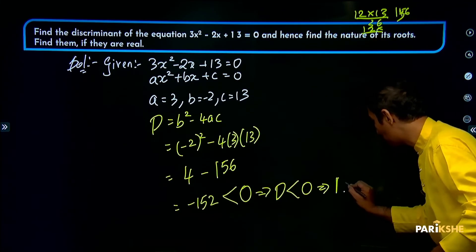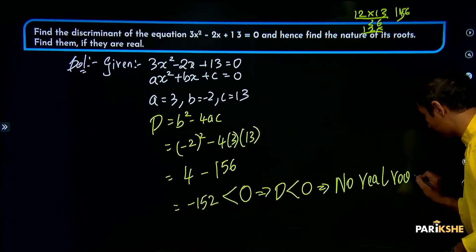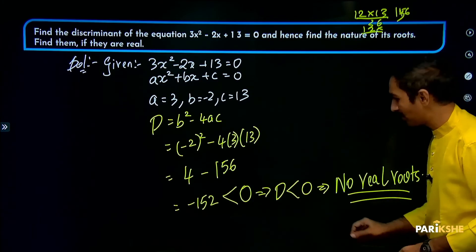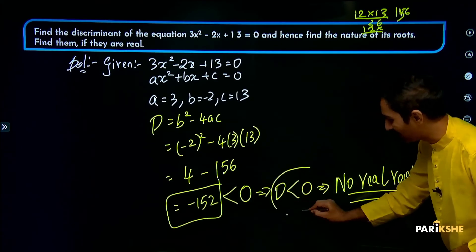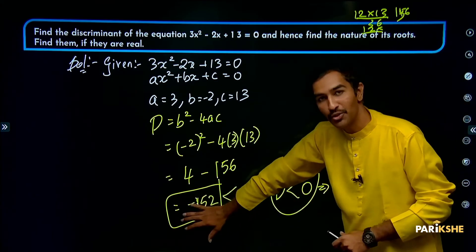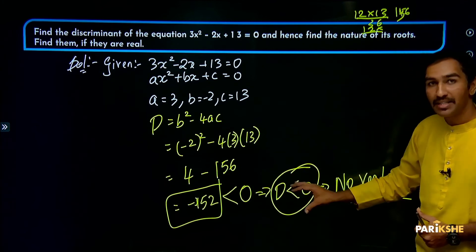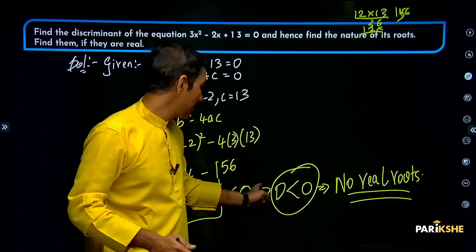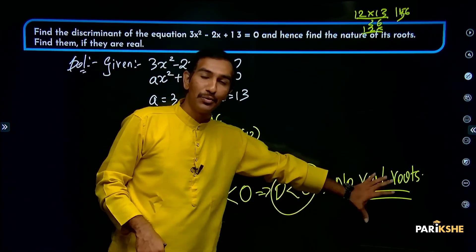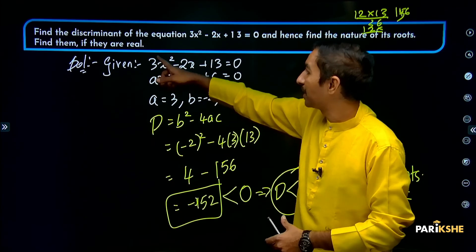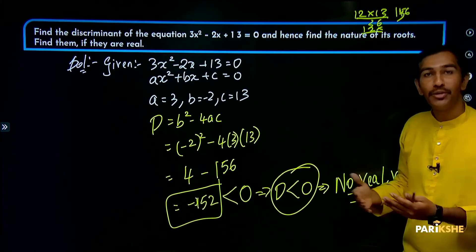Since minus 152 is less than 0, D is less than 0, which implies there are no real roots. The discriminant is minus 152, the condition applied is D less than 0, and the nature of the roots is that the roots are not real.